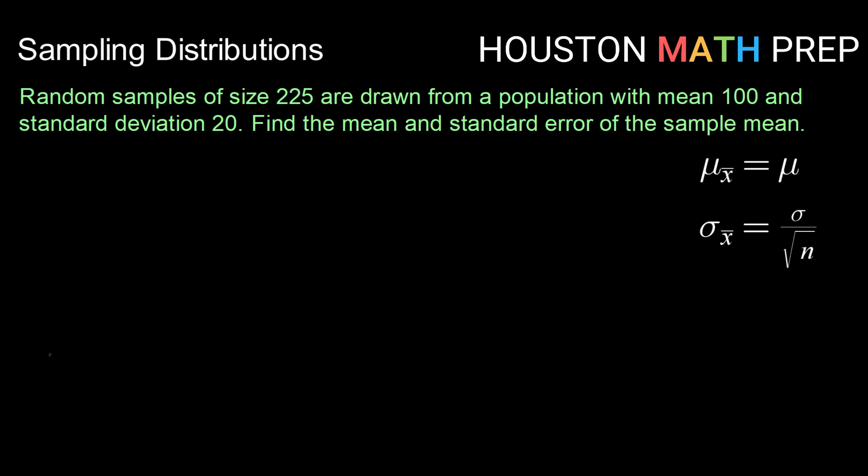So let's say that random samples of size 225 are drawn from a population. That population has a mean of 100 and a standard deviation of 20. Find the mean and the standard error of the sample mean. So here we can use our two properties. One that says the mean for the sample means will be equal to the mean of the population. So that one's nice and quick. The mean of X bar is the same as the mean of the population or 100.